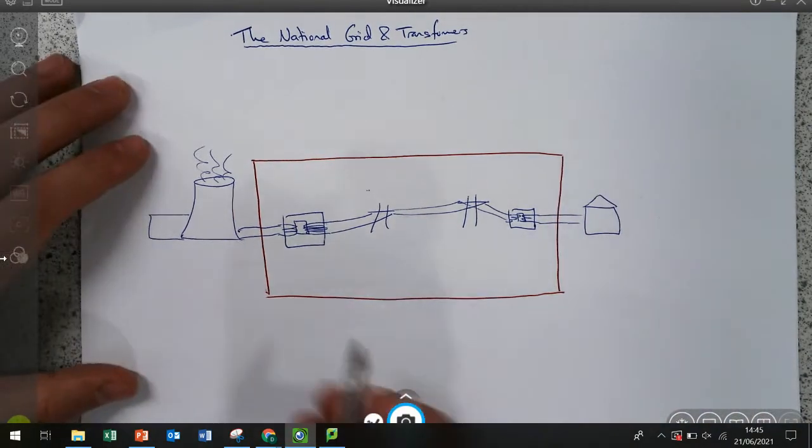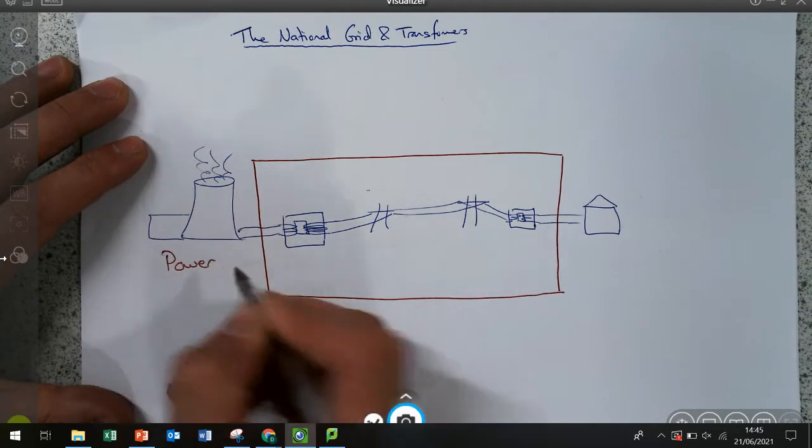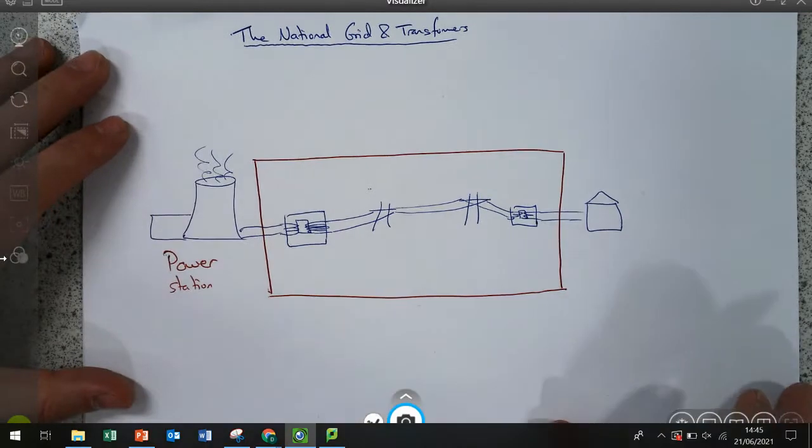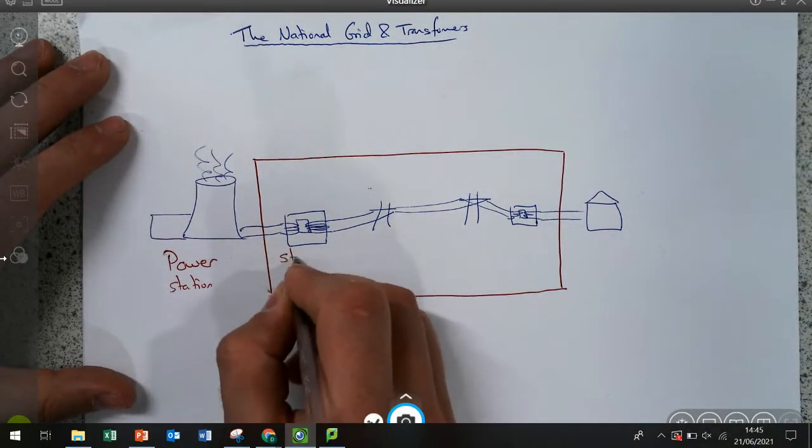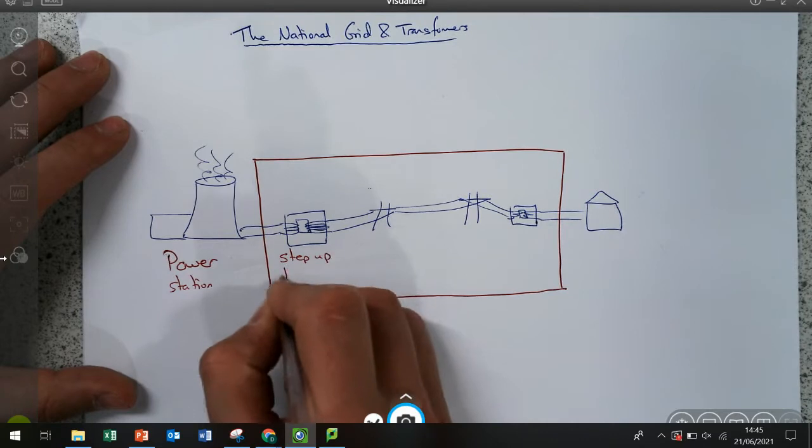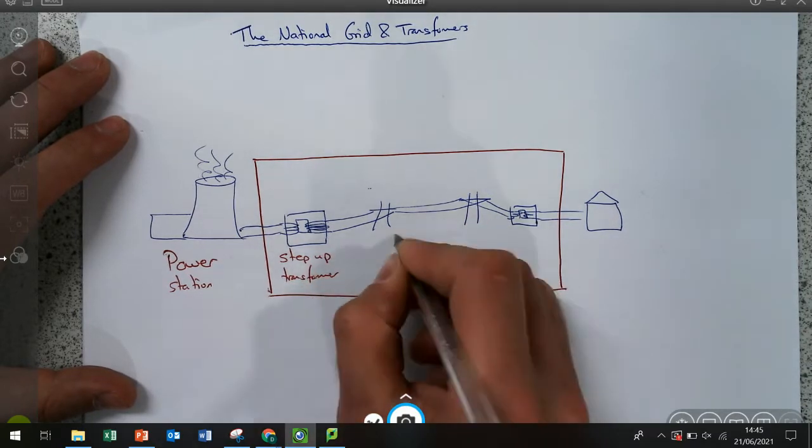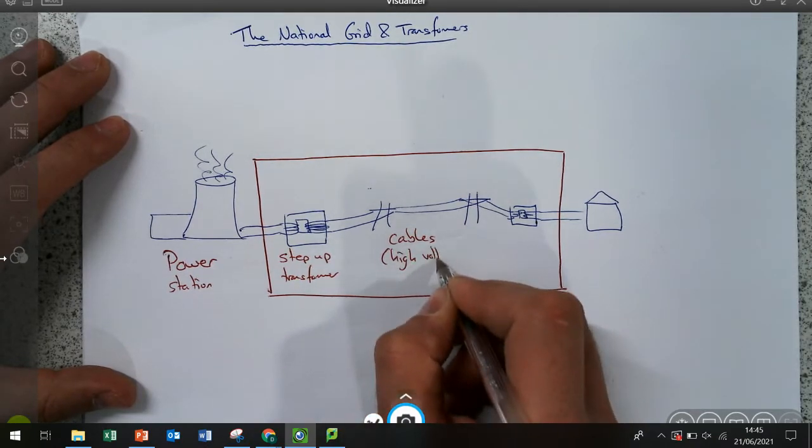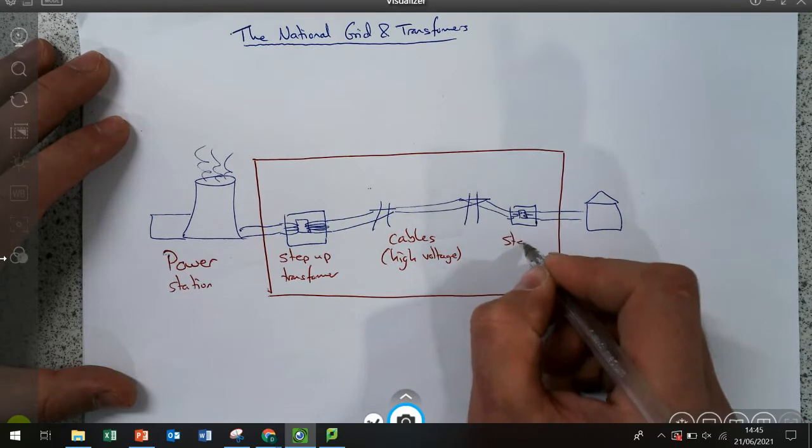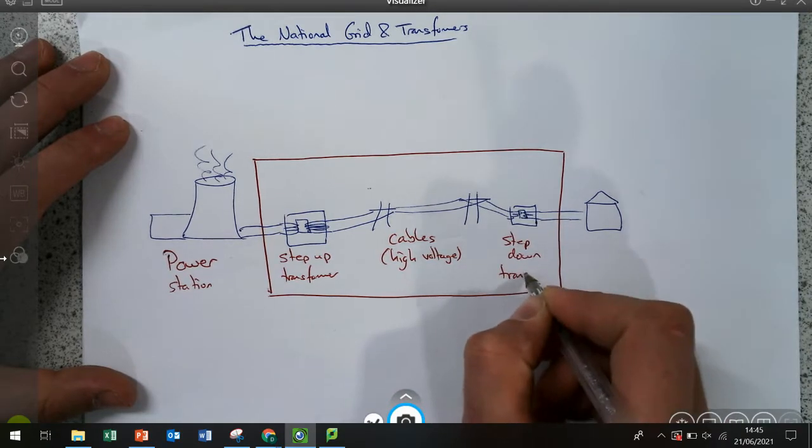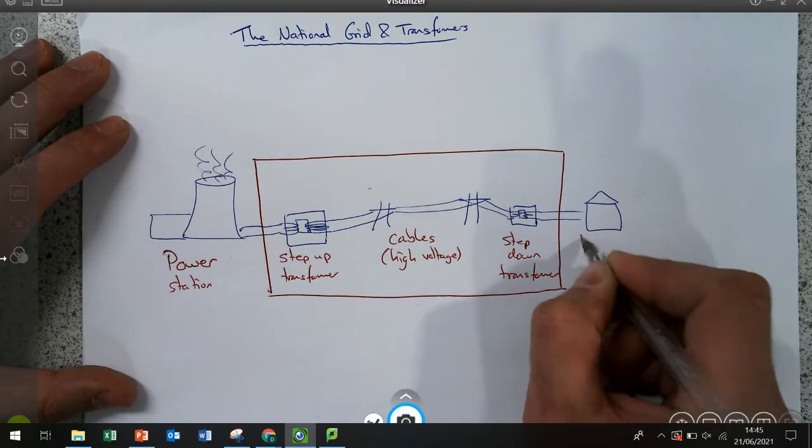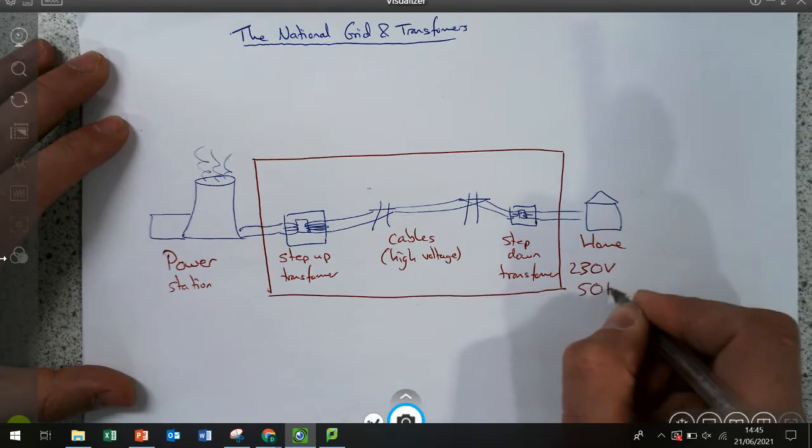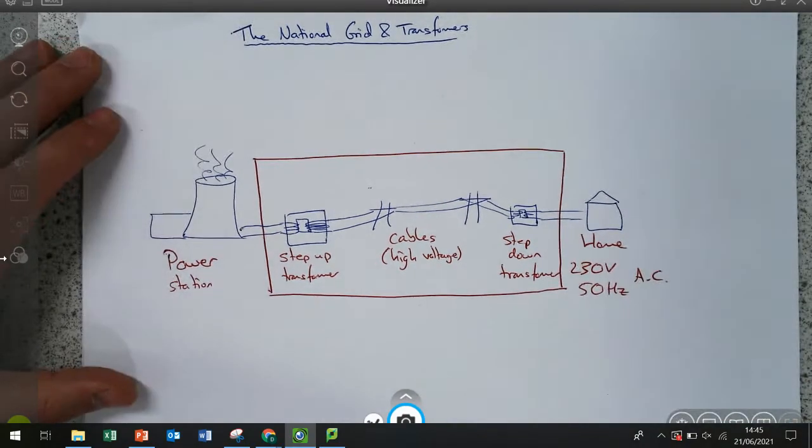Students do need to know the process. They need to know that electricity is generated in a power station which could be fossil fueled, nuclear fueled or renewable energy. They need to know that it goes through a step up transformer through the cables which are usually referred to as high voltage through a step down transformer and then into the home at 230 volts 50 Hertz AC alternating current.